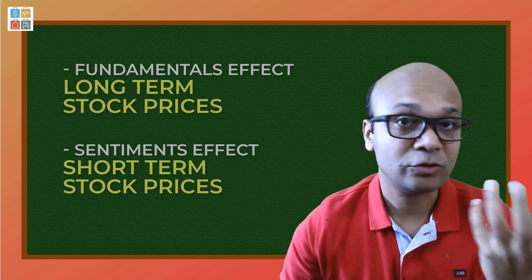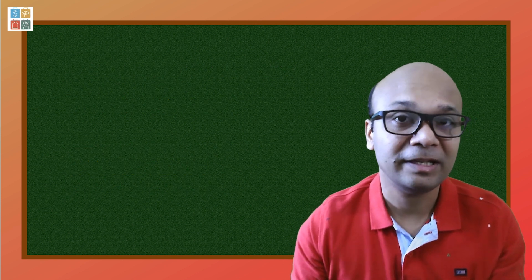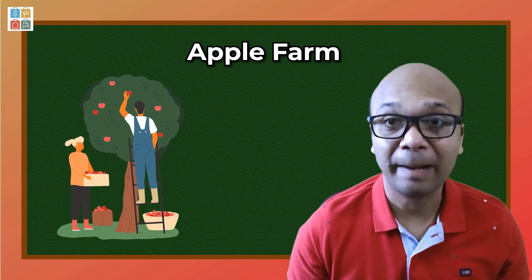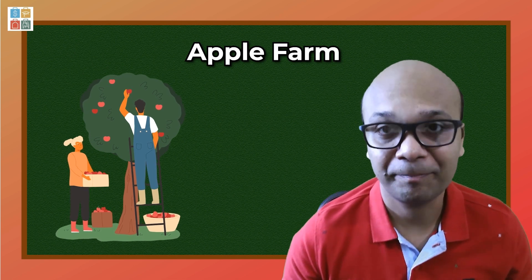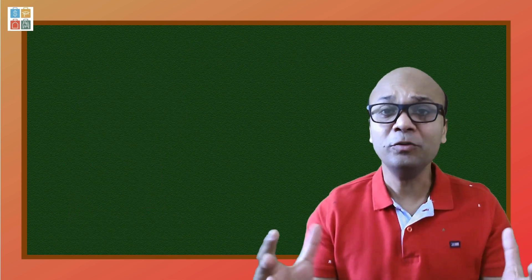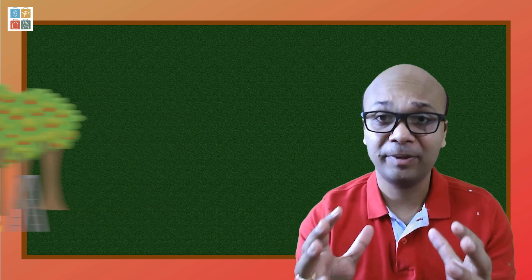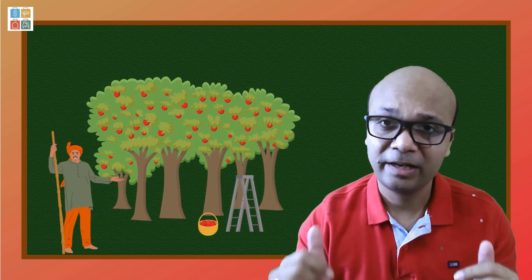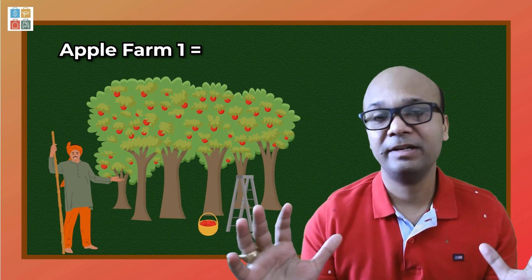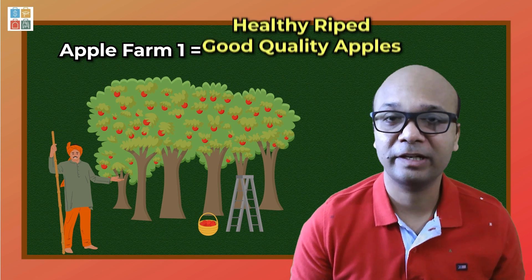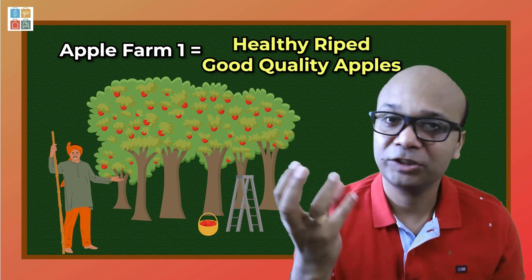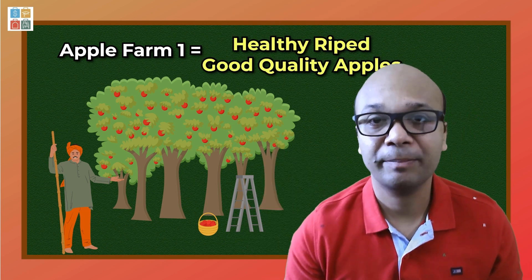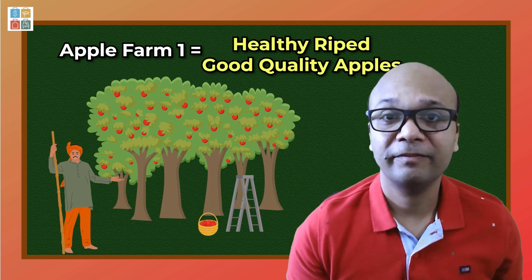We will not take a specific stock example, but let's take an example of a small apple farm or apple orchard. Assume that one apple farm is very popular, with a lot of healthy, plush, small red apples and good growth there.